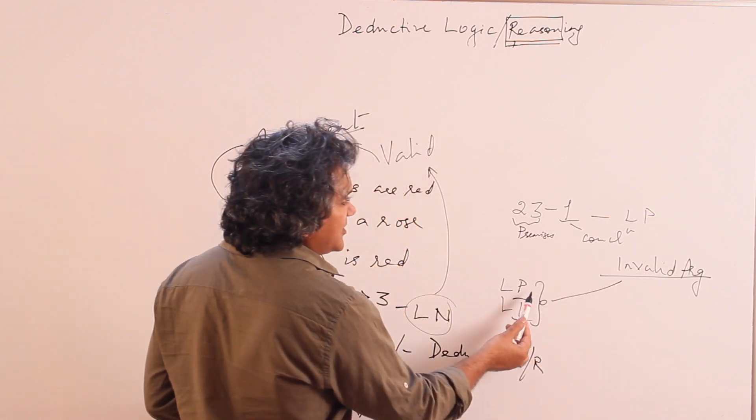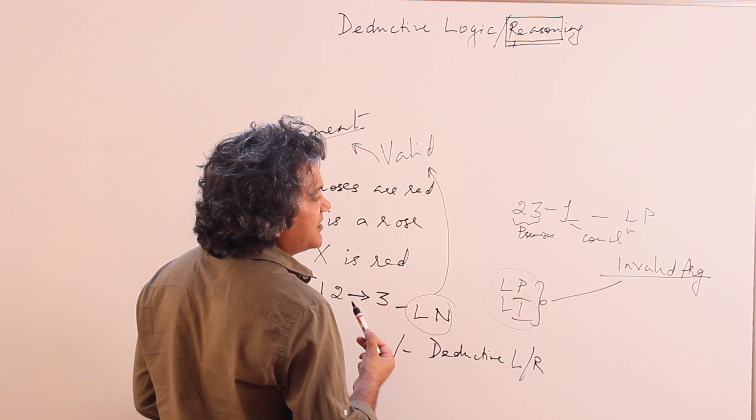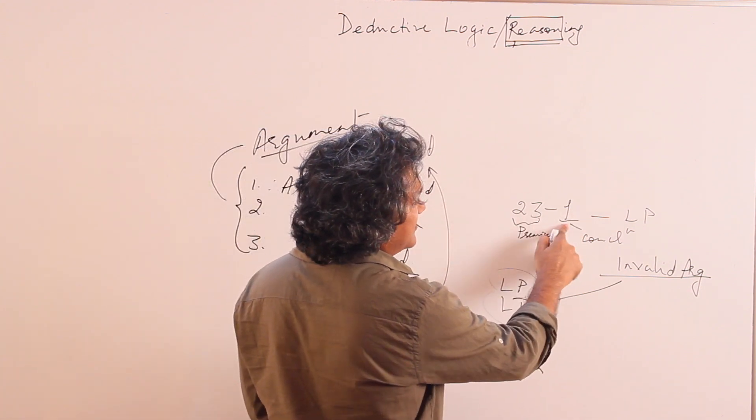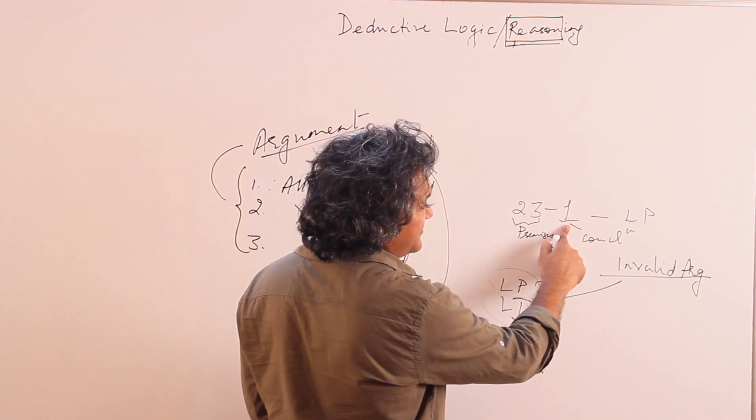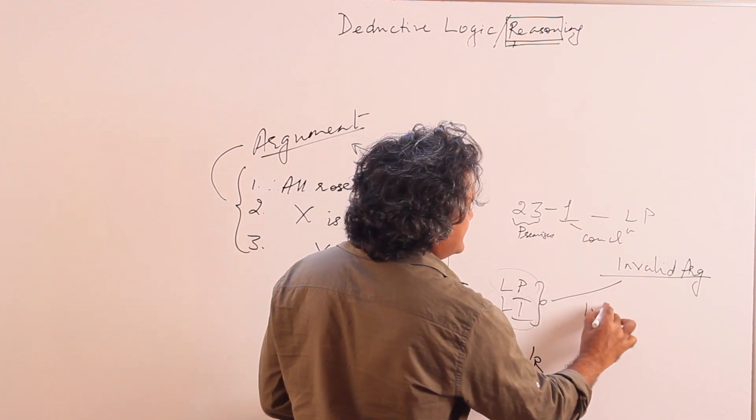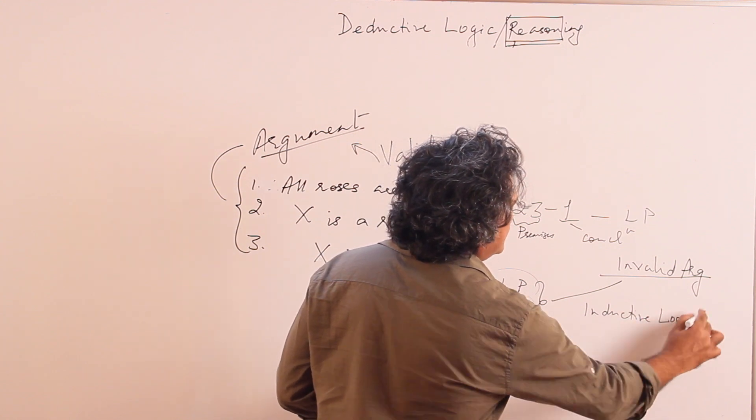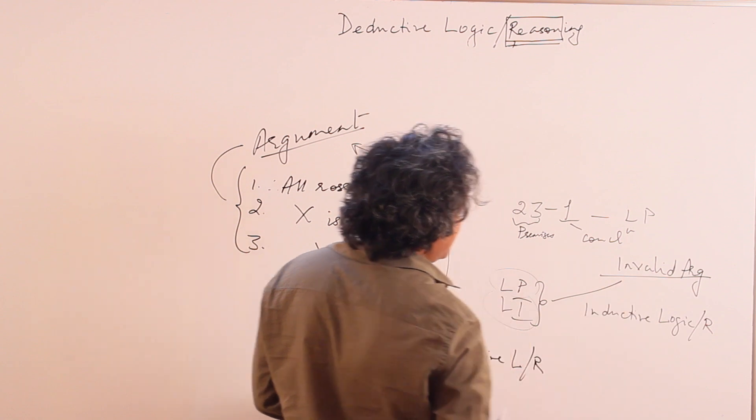Invalid argument is both of them. So invalid argument could be an LP argument or it could be an LI argument. Now this particular form of an argument wherein the conclusion may or may not follow is known as inductive reasoning or inductive logic.